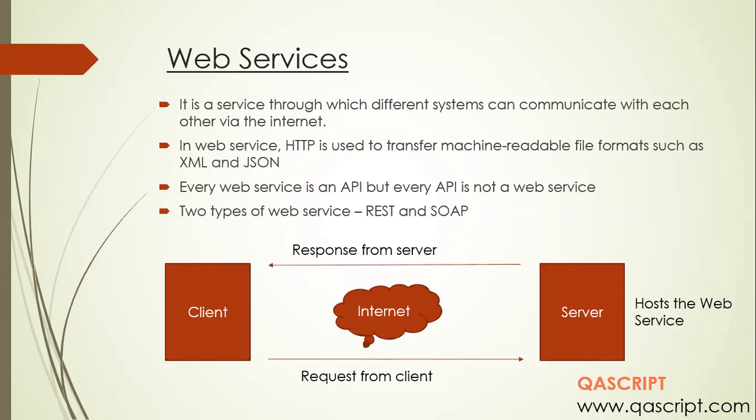There are two most popular types of web service APIs: the REST API and the SOAP API. This can be explained with a simple diagram — there is a client and a server. The client sends a request to the server through the HTTP protocol over the internet, and the server responds back in a machine-readable format such as JSON or XML, which the client can then process and use in its own applications.